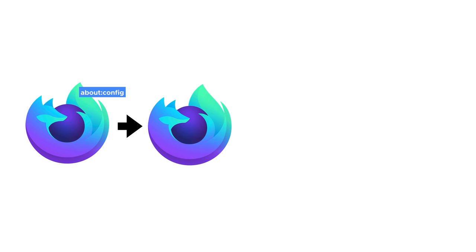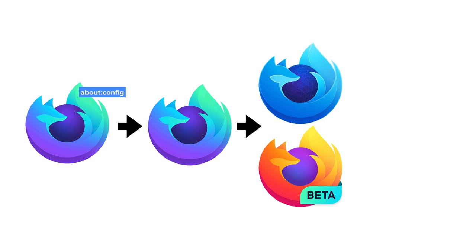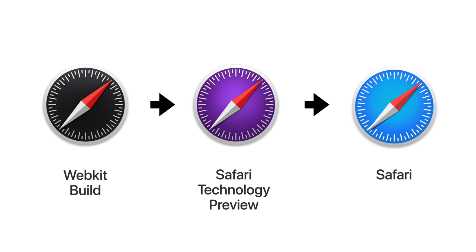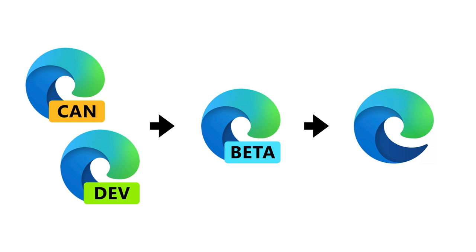This is how Firefox advances — how things get from an idea, to running code, to tested and robust code, to actually in the hands of users. Things land usually behind a flag or pref, then the pref gets removed, then they go from Nightly to Developer Edition and Beta, and then from Developer Edition and Beta into regular Firefox. All browsers do this. Safari has a WebKit build and a Safari Technical Preview, which is a great place to test what's coming in the next version of Safari.